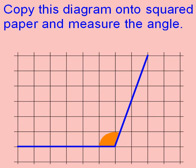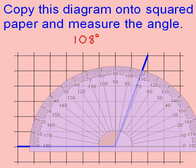Here's a question for you to try. Copy the diagram accurately onto squared paper — draw a line six squares long, then go across two squares and up six squares. This will ensure your diagram is accurate. Press pause and have a go. The answer is 108 degrees — remember to put the degree symbol. You are allowed to be one degree out either way, so 107 degrees or 109 degrees are also acceptable.